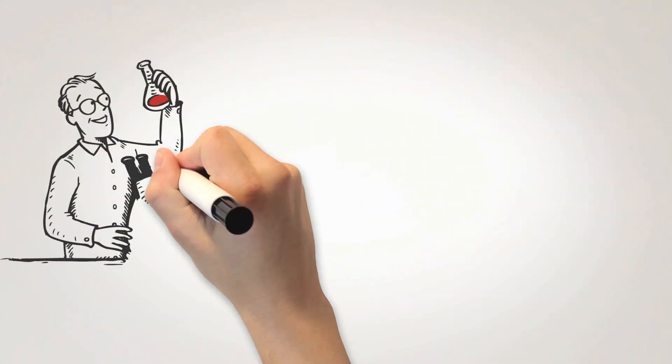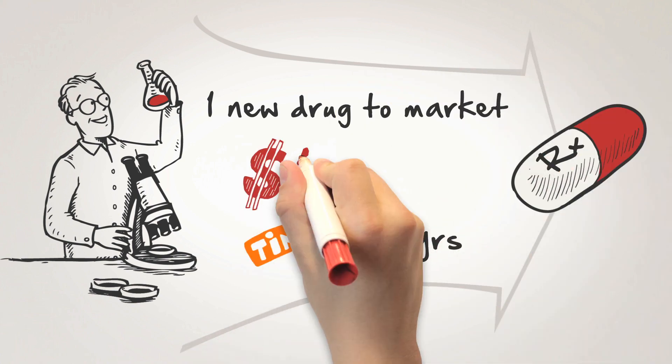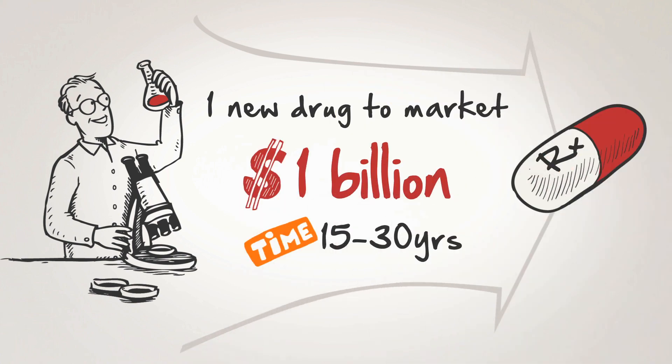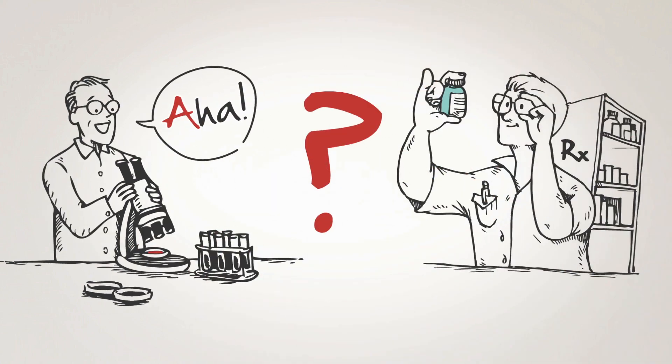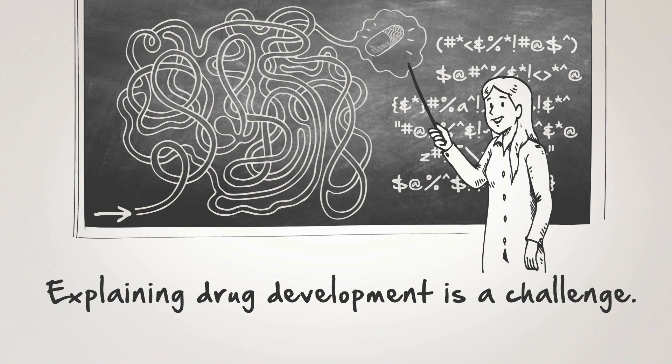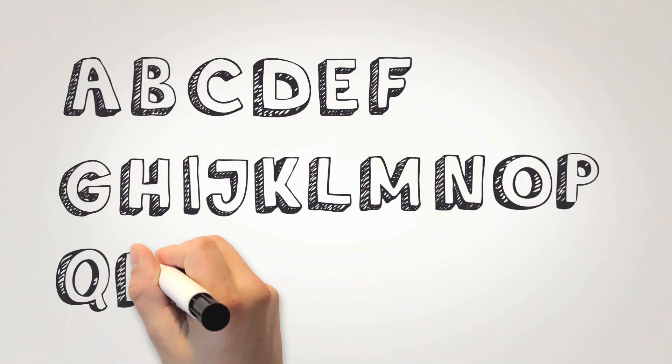Sadly, to bring one new central nervous system drug to market takes 15 to 30 years and well over $1 billion. So what does it take to get an aha moment to the drugstore shelf? Just explaining drug development is a challenge, so I often use the alphabet as an analogy to help make sense of these complicated concepts.